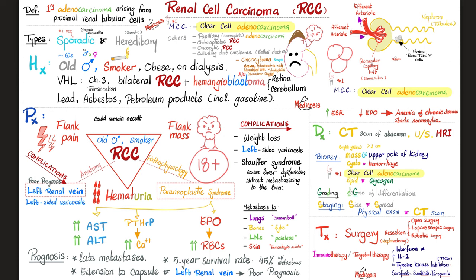In some cases, RCC is symptomatic. If it metastasizes to the left renal vein, male patients can develop left-sided varicocele. Don't forget the paraneoplastic syndrome — I can get symptoms of polycythemia or symptoms of hypercalcemia, similar to primary hyperparathyroidism: bones, groans, thrones, moans, psychiatric overtones.